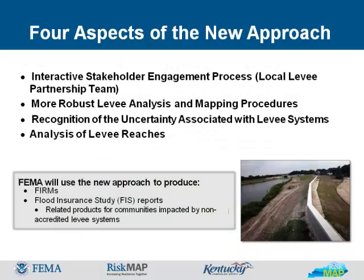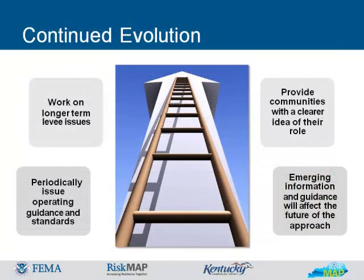Four aspects of the new approach include an interactive stakeholder engagement process such as a local levy partnership team, more robust levy analysis and mapping procedures, recognition of the uncertainty associated with levy systems, and analysis of levy regions. FEMA will use the new process to produce flood insurance rate maps, flood insurance study reports, and related products for communities and tribes impacted by non-accredited levy systems until they are replaced by longer-term solutions developed through NFIP regulatory reform. A core goal of the new procedures includes identifying more refined flood hazards associated with non-accredited levy systems and reflecting the results in FIRMs and related products. An important outcome is increasing the credibility of flood insurance rate maps where non-accredited levy systems exist. The agency is committed to understanding local knowledge and operation of a levy system and collaborating to determine the appropriate LAMP approaches.